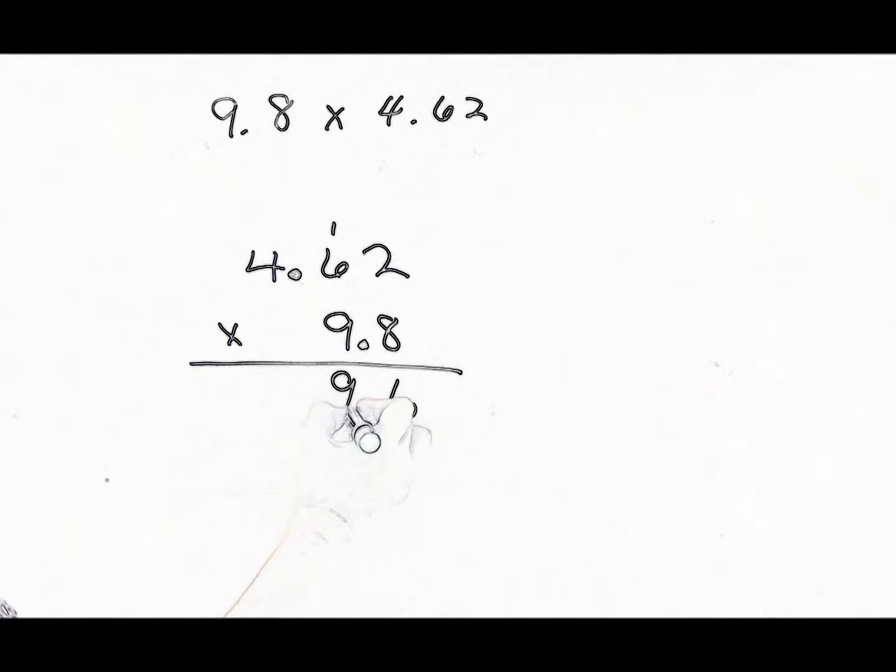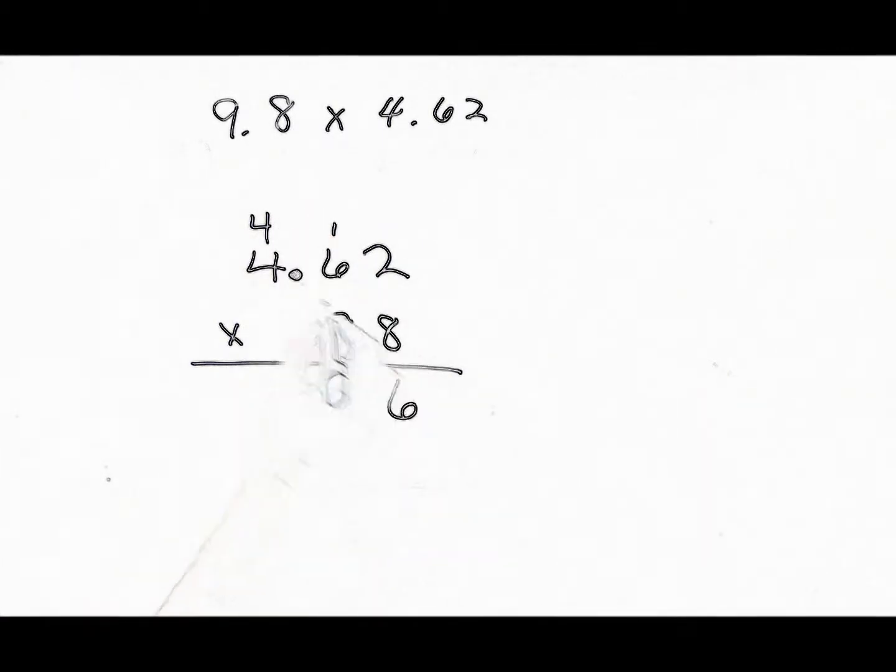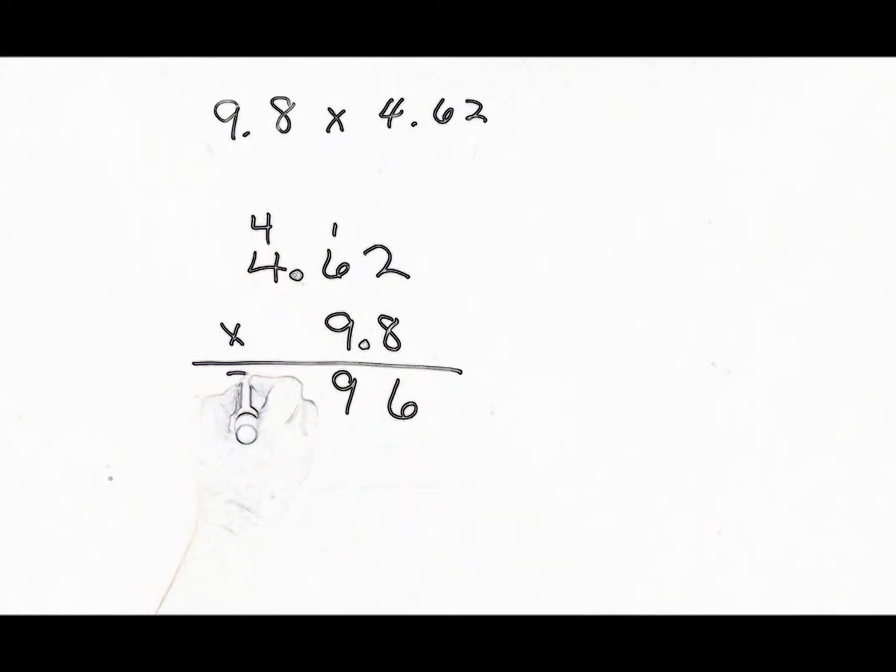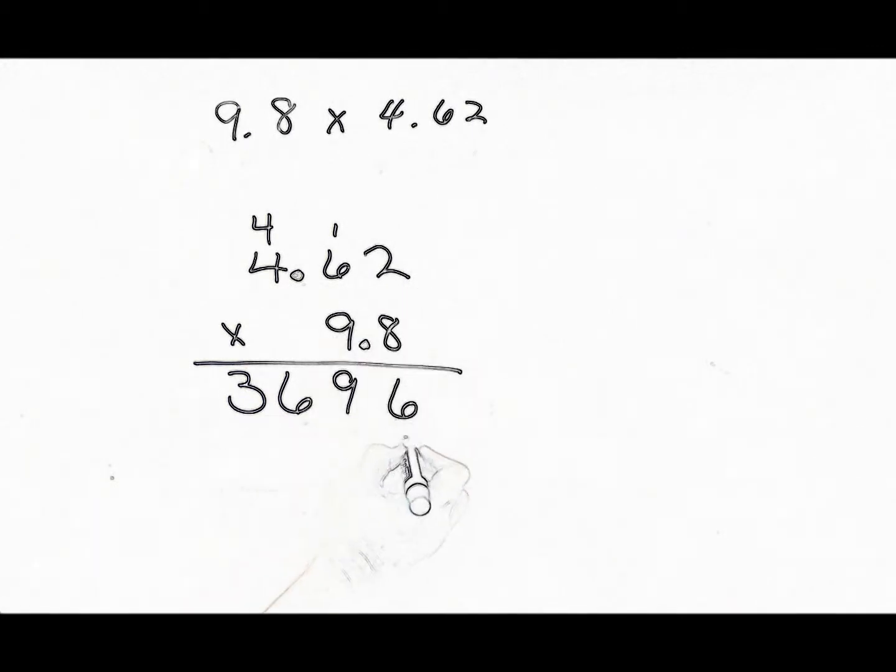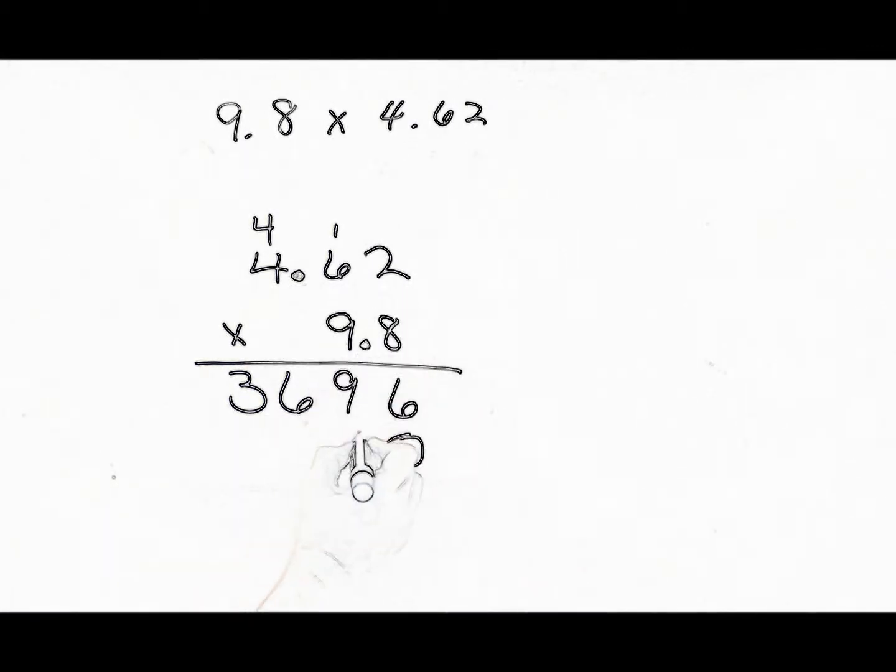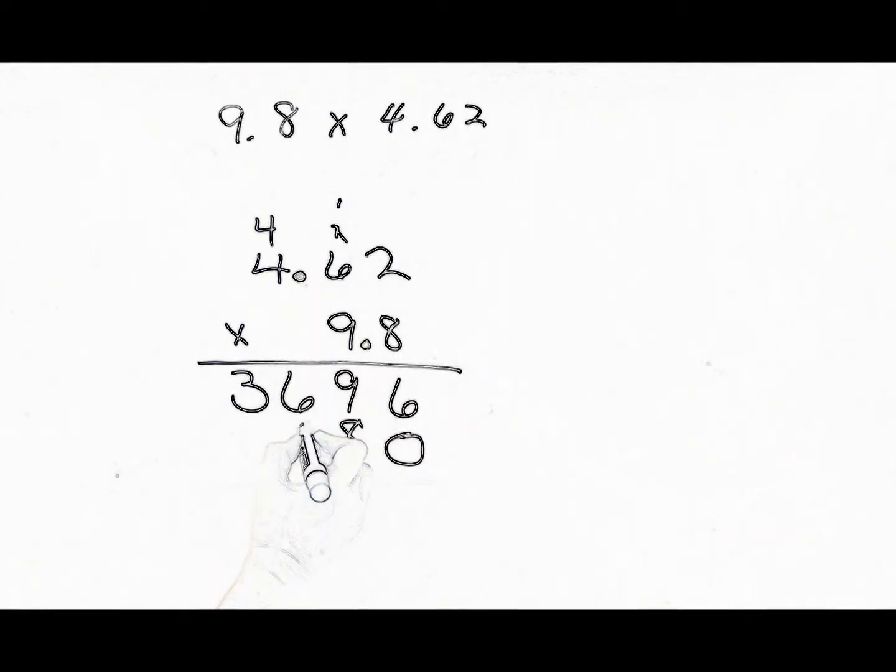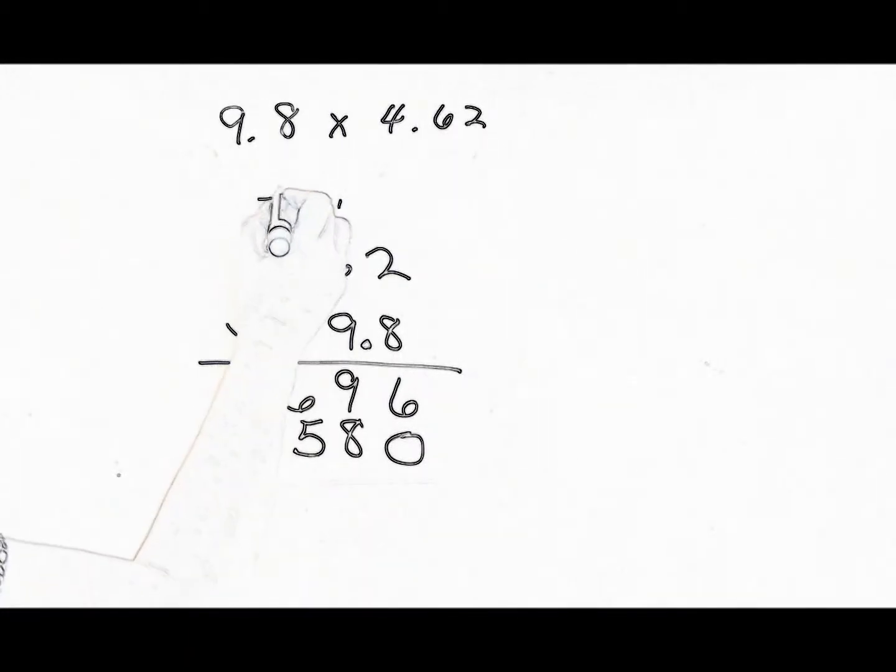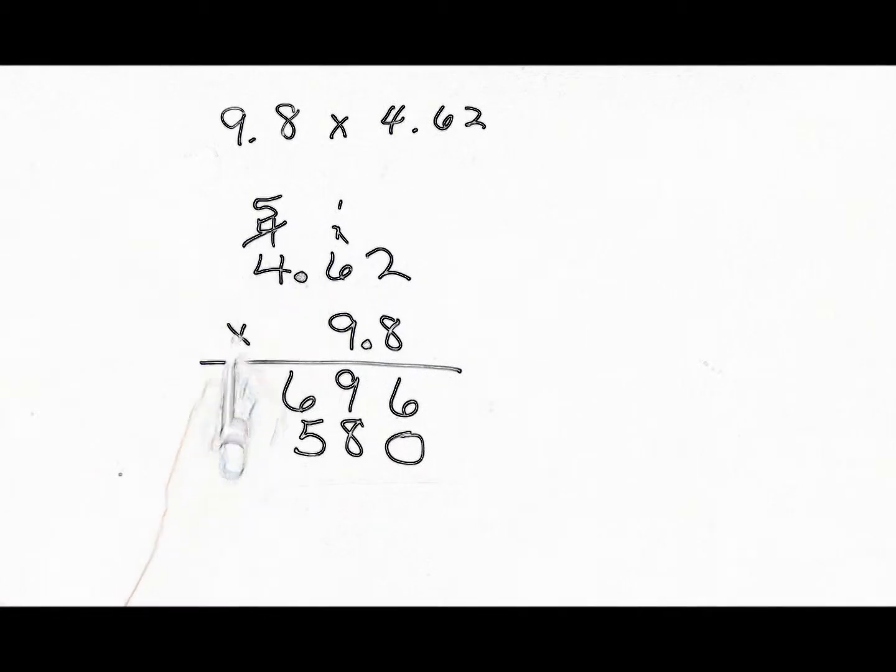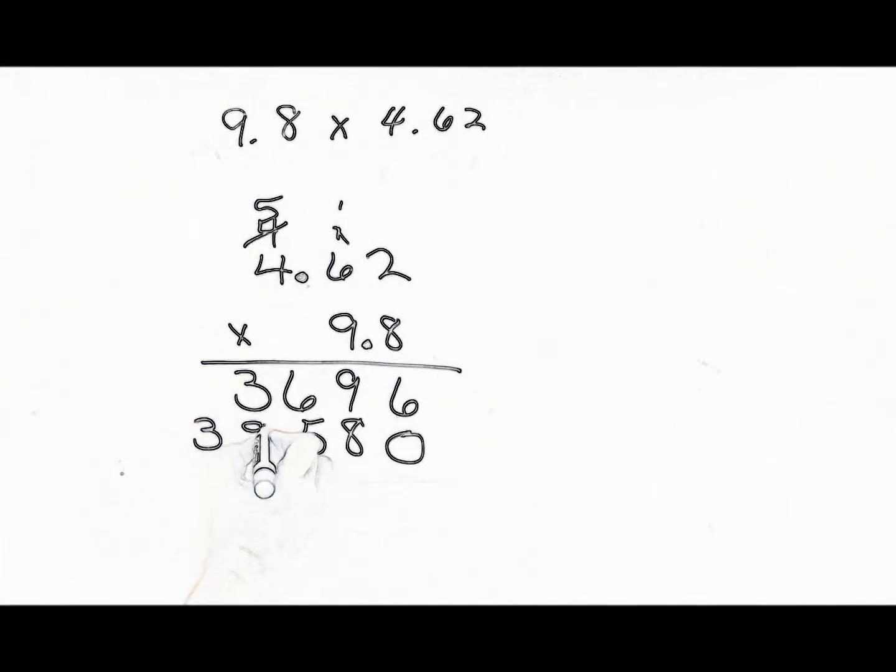16, that would be 49. 8 times 4 is 32 and 4 is 36. Now, we're going to put our zero placer there. 9 times 2 is 18. Carry 1. 9 times 6 is 54 and 1 is 55. 9 times 4 is 36 and 5 is 39.